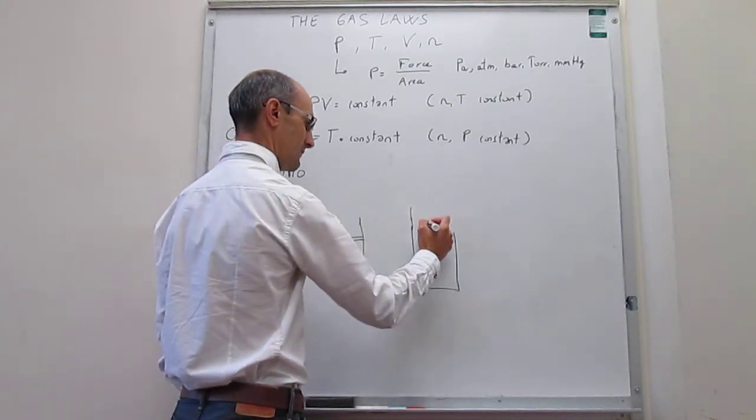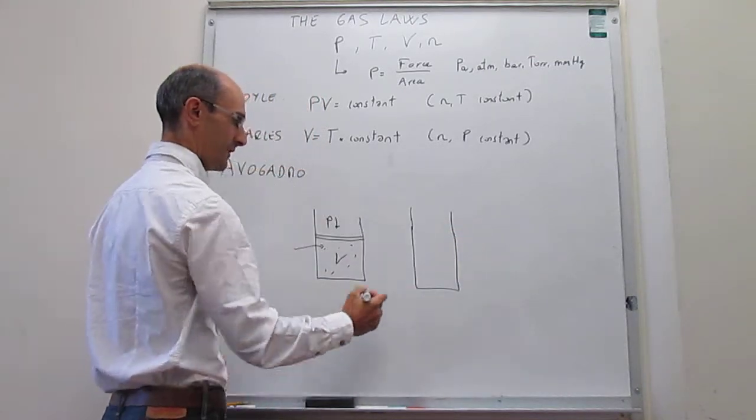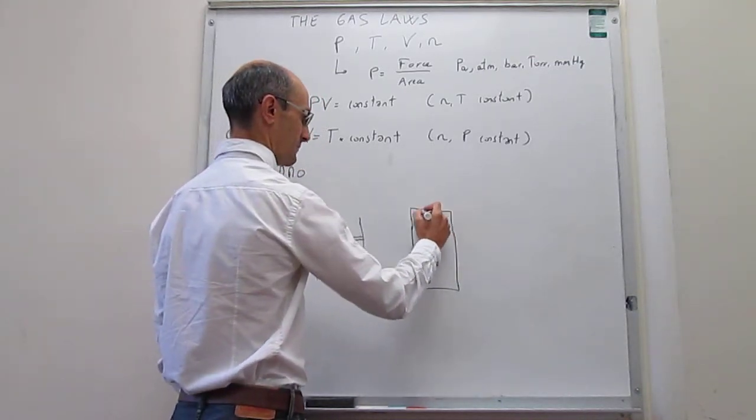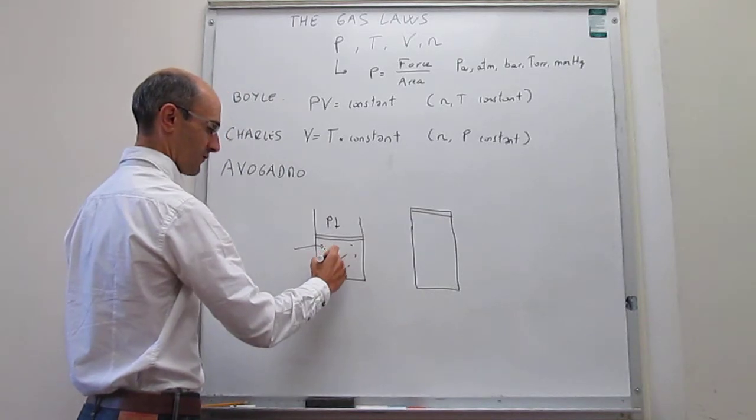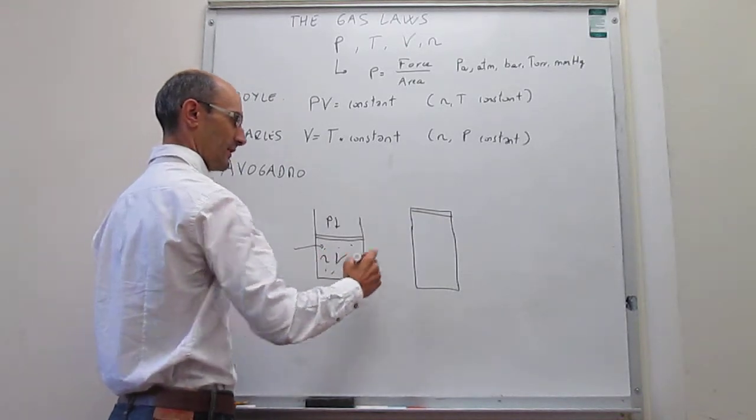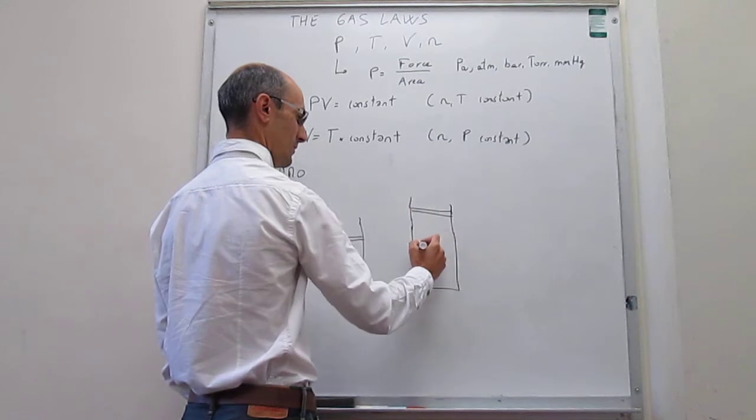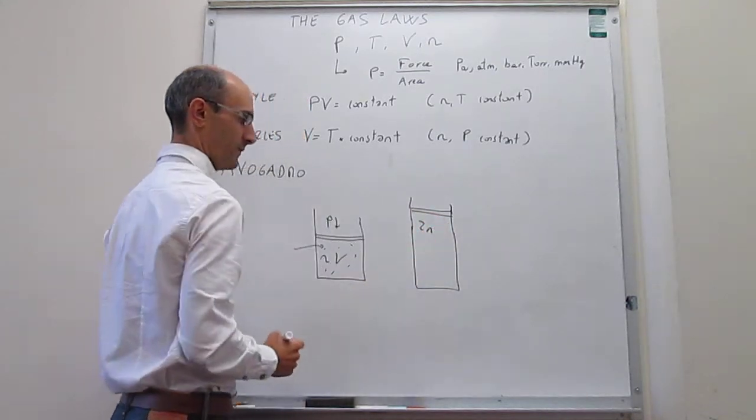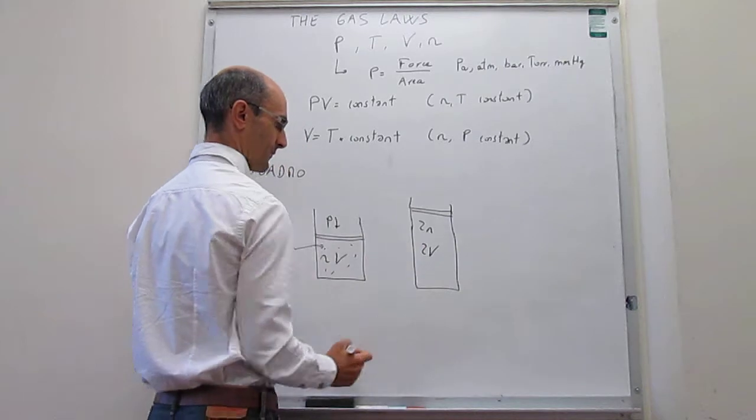So the finding was that if you double the number of molecules that you have, the volume also doubles. So initially you have a number of moles n. And it turns out that if you double the number of molecules, then the volume doubles as well.